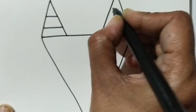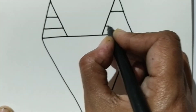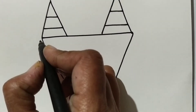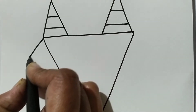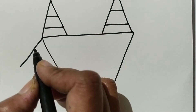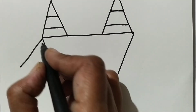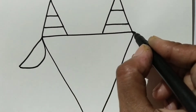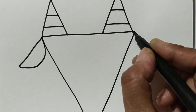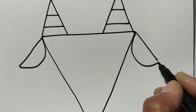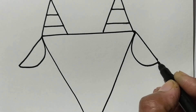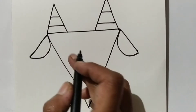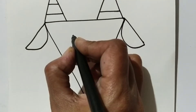Then draw a slanting line and half circle to show his ears, half circle again, slanting line and half circle. Then draw two circles to show his eyes.